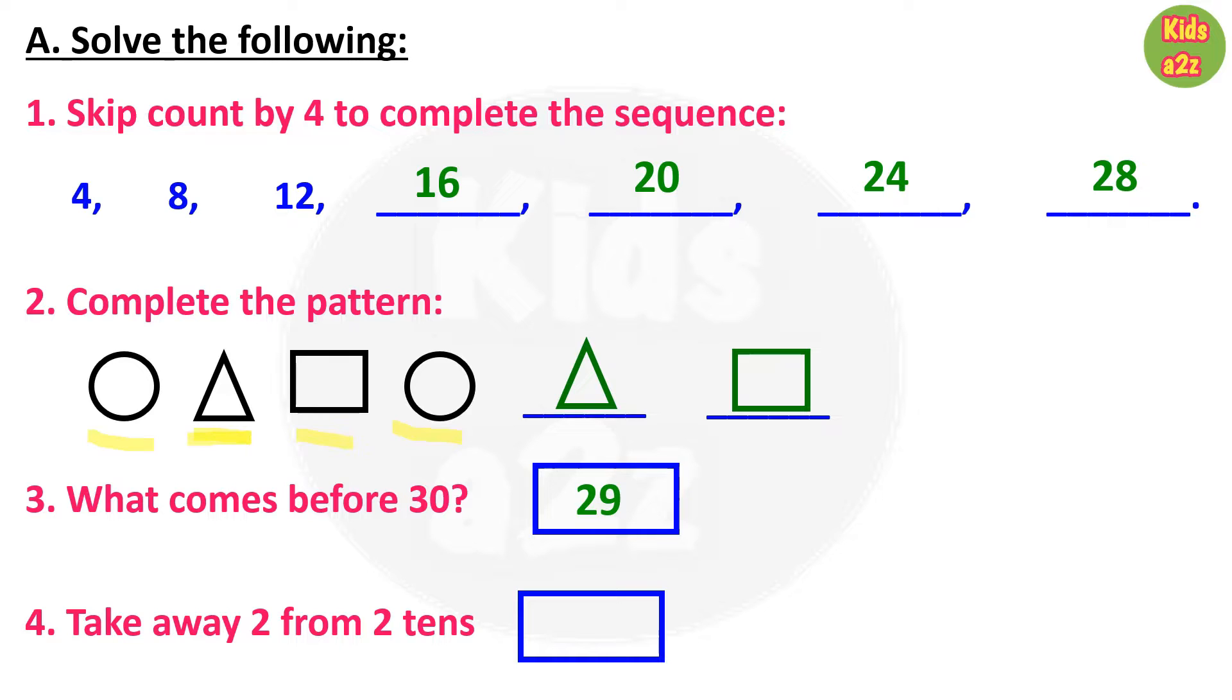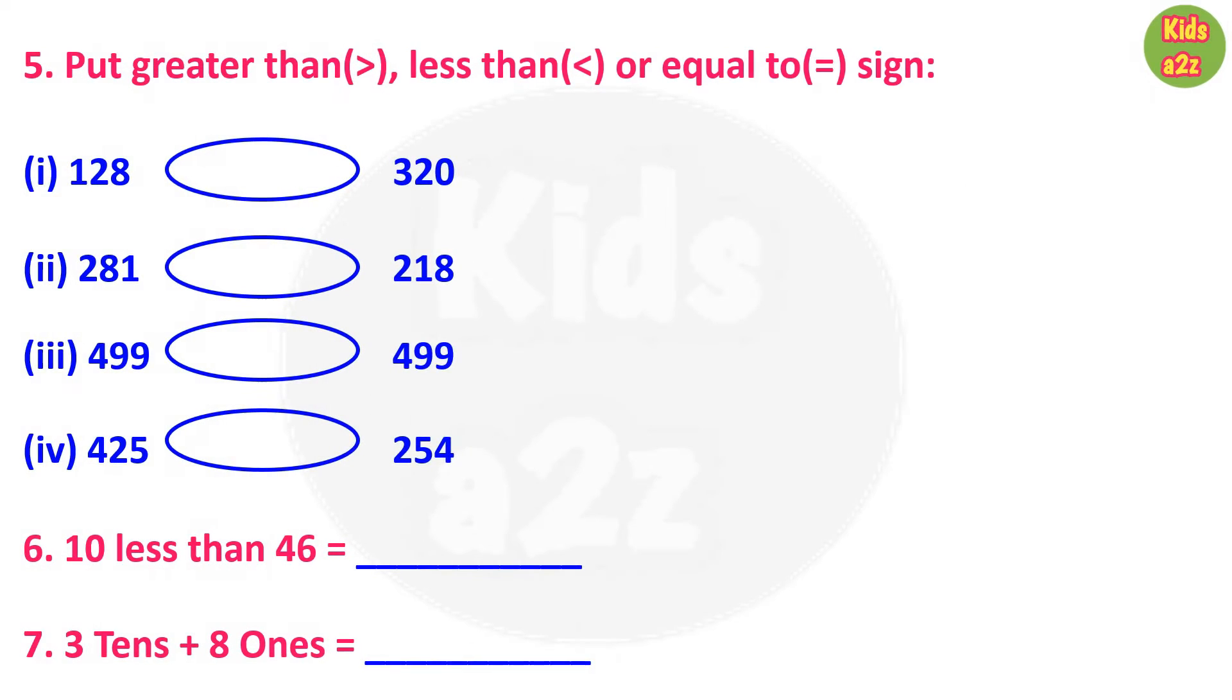Question number 4: take away 2 from two tens. So two tens means 20, and then we need to subtract 2 from 20, so the answer is 18. For question number 5, kids need to put greater than, less than, or equals to sign between two numbers.